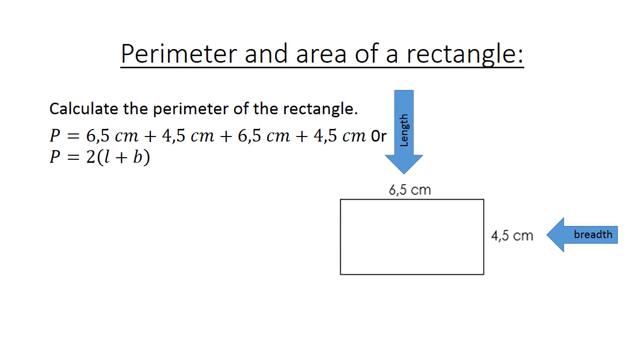perimeter equals 2 times length plus the breadth, equals 2 times 6.5 cm plus 4.5 cm. And the perimeter equals 22 cm.